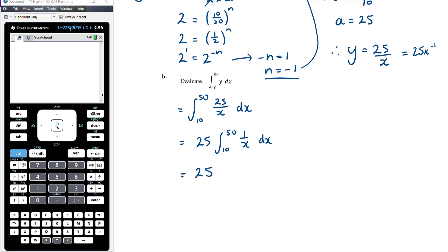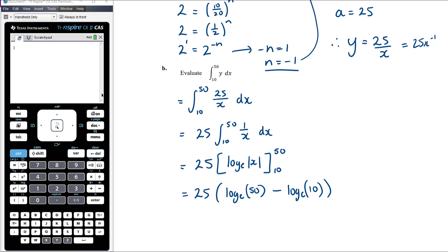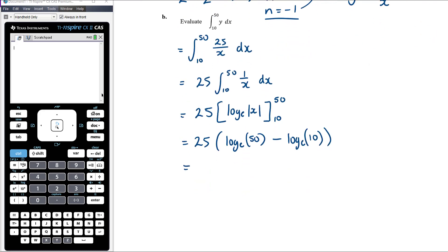The anti-derivative of 1 on x is log e of x from 10 to 50. So we have 25 times log e of the absolute value of 50, which is just 50 because it's already positive, take away log e of the absolute value of 10, which is just 10. We can subtract those logs by doing division, so it's going to be log e of 50 divided by 10, so log e of 5.